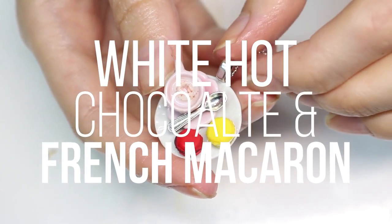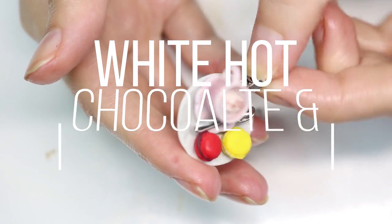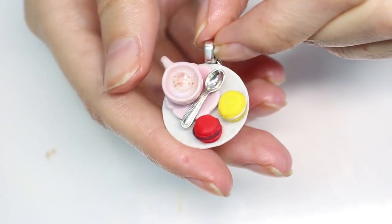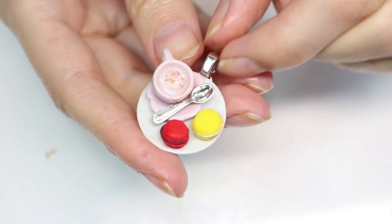Hi everyone, and welcome to another episode of Cooking with Candyware. Today we're going to be making a little macaron white hot chocolate plate.